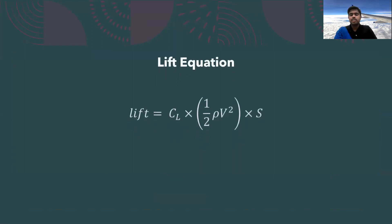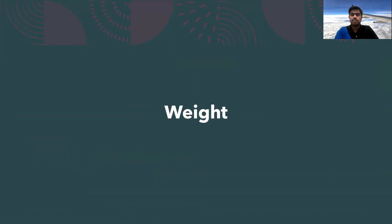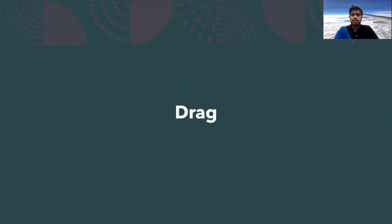And the lift equation is given by lift is equal to CL half rho V square S, where CL is called the coefficient of lift. Next, we have something called weight. It's just the weight of any object. By Newton's second law, we have weight is equal to mass into the gravitational acceleration. It's as simple as that.